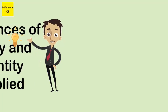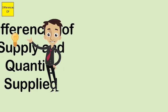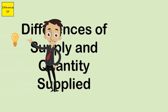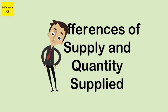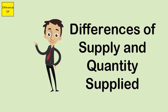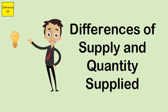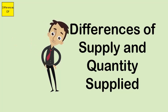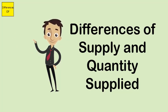Difference between supply and quantity supplied. Supply is the designated name for the amount of products or services that are to be provided by a certain company to a market. Quantity supplied is the name for a specific point in the supply curve.